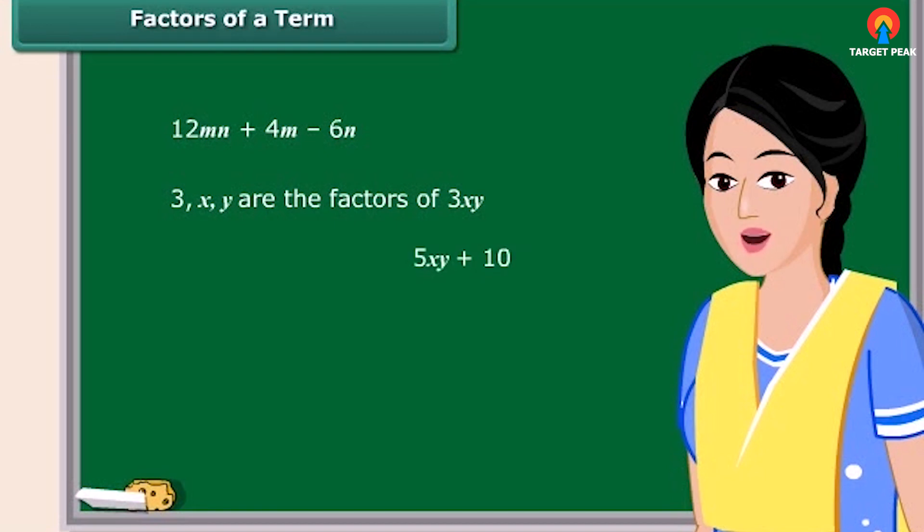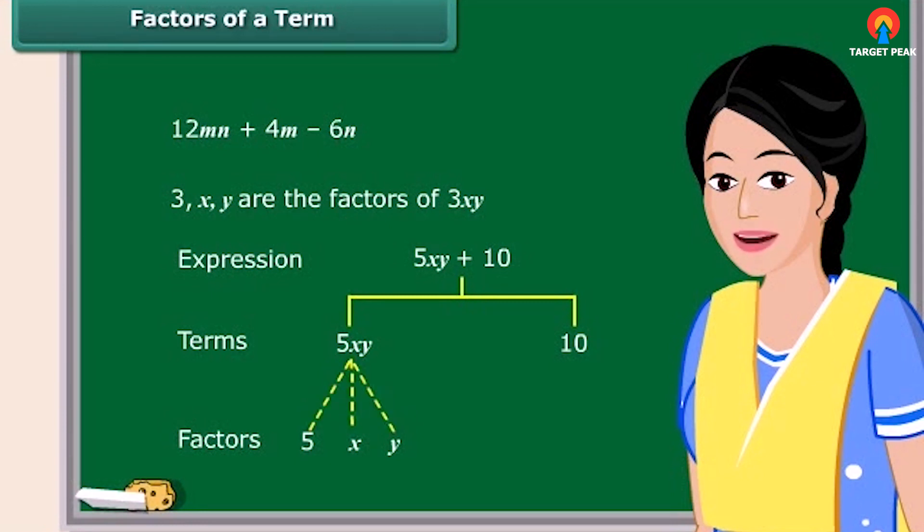Do you know, we can also represent 5XY plus 10 by a tree diagram. See, the dotted lines are used here for factors and continuous lines for terms. Remember, the factors cannot be further factorized.